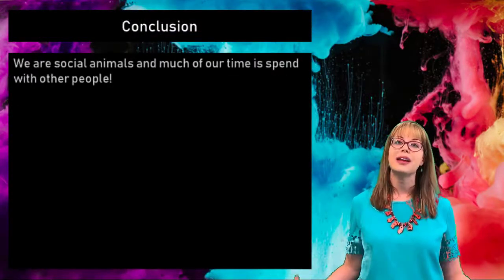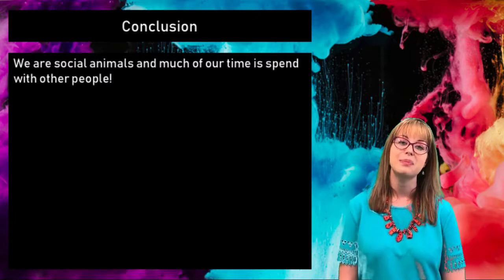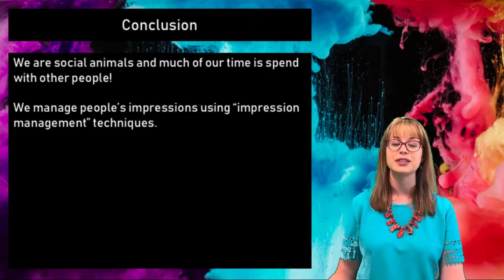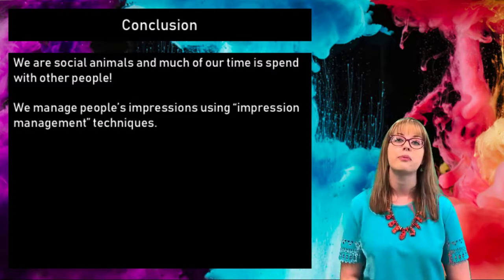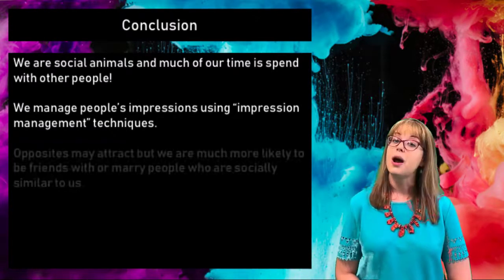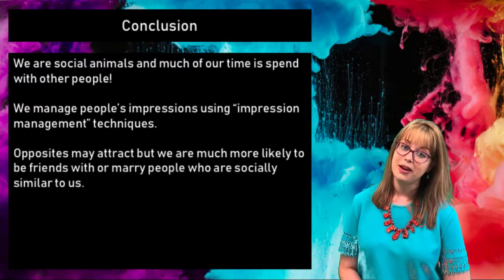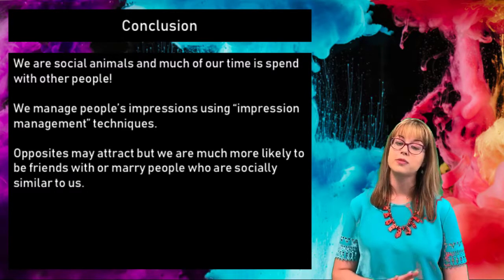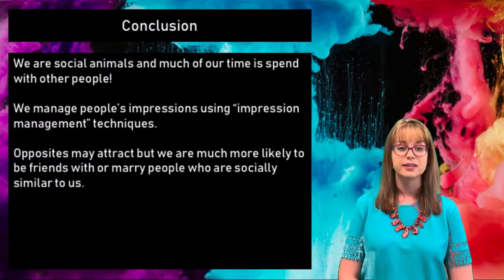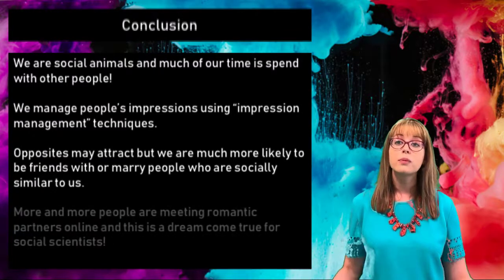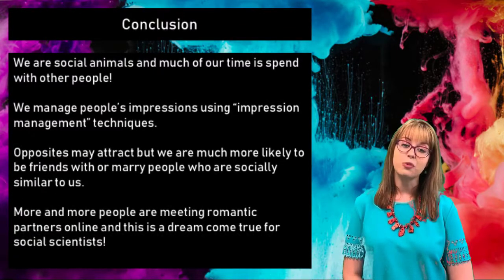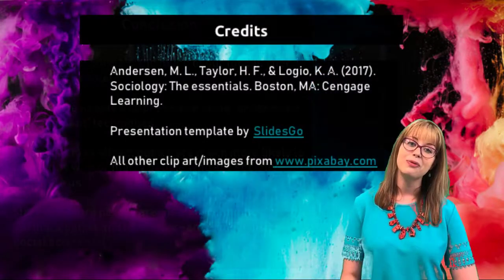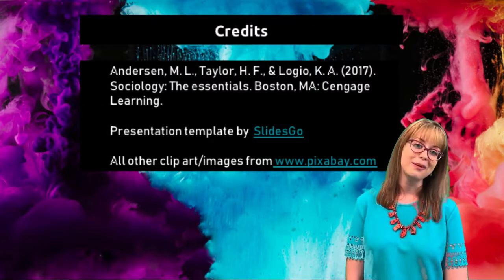In conclusion, we are social animals and much of our time is spent with other people. We are invested in managing our impressions and trying to make the best impression possible. Opposites may attract, but we're far more likely to marry someone who is socially similar to us in age, race, social class, education, and political affiliation. More and more people are meeting romantic partners online and spending time with others online. Thanks for watching, and I look forward to diving into next week's topic. Bye!